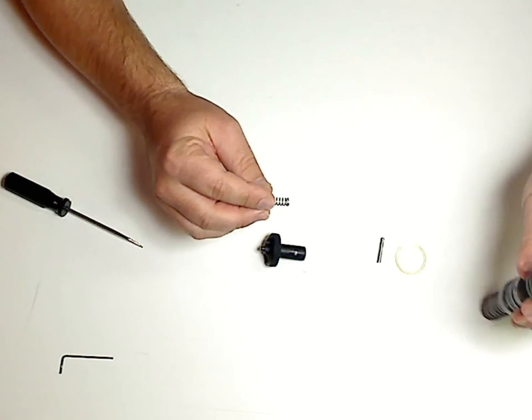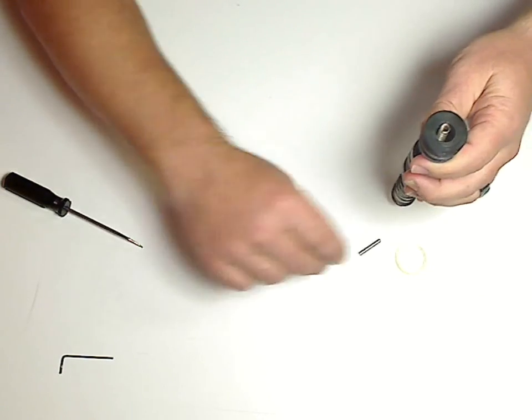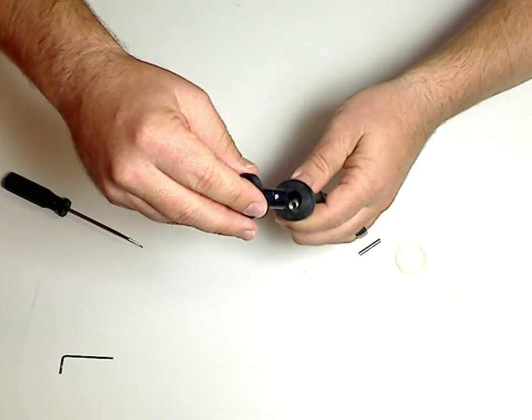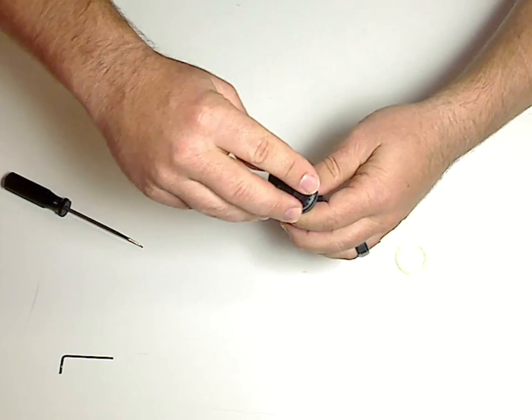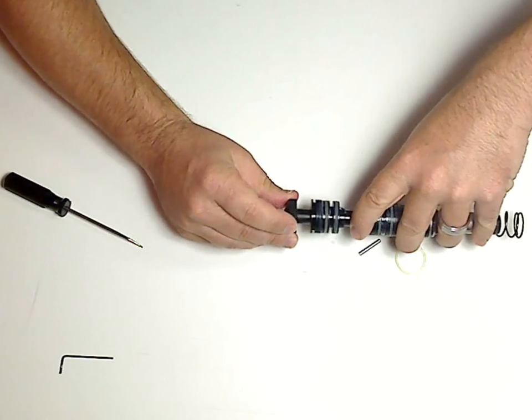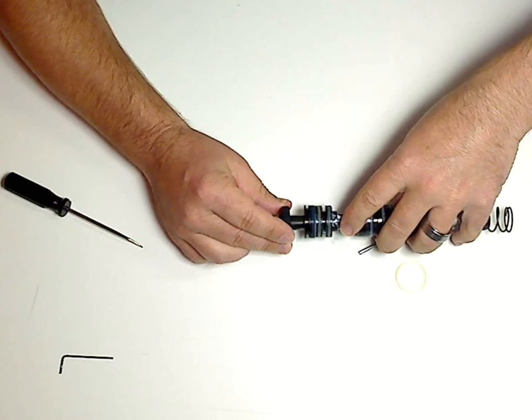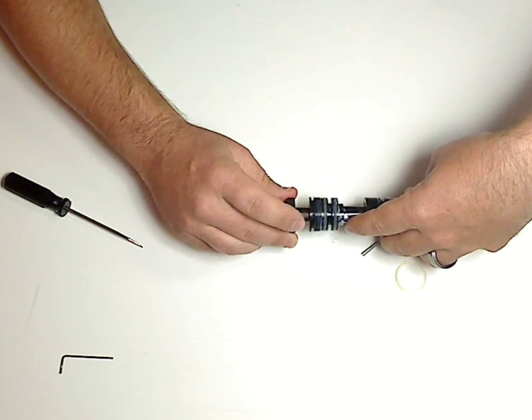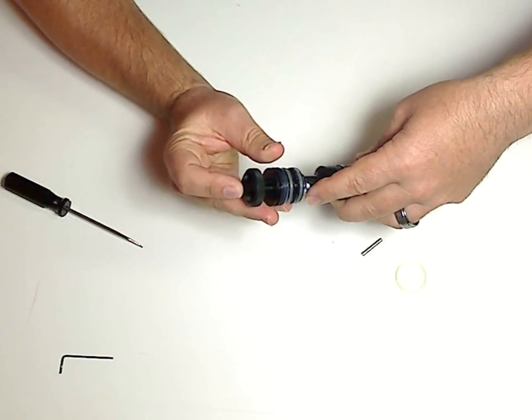At this point we can drop our spring down in. Set the cap on there. Make sure the spring lines up. And now we're trying to line up the hole here that goes through for the pin. There we go. I heard it snap into place.